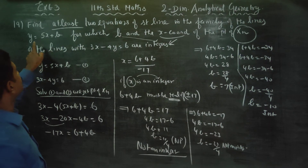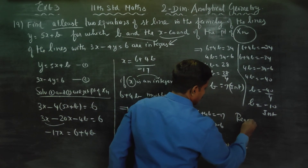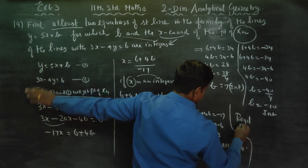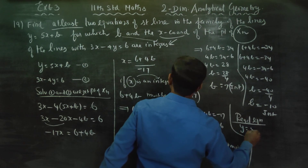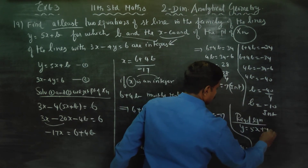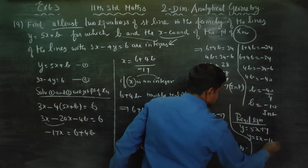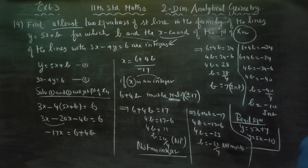The final answers are the required equations: y = 5x + 7 and y = 5x − 10. These are the two equations of straight lines from the family y = 5x + b for which the x-coordinate of intersection with 3x − 4y = 6 is an integer. Thank you.